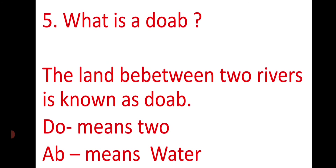What is a Doab? The land between two rivers is known as a Doab. The region between two rivers is called a Doab. 'Do' means two and 'ab' means water.